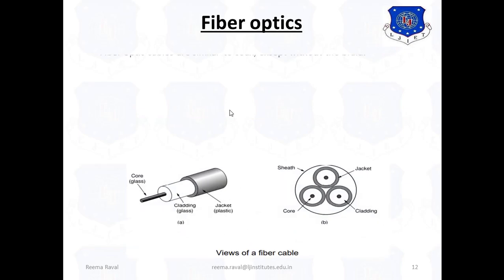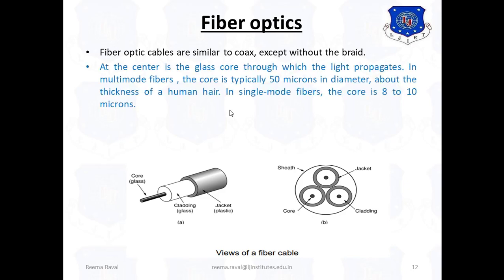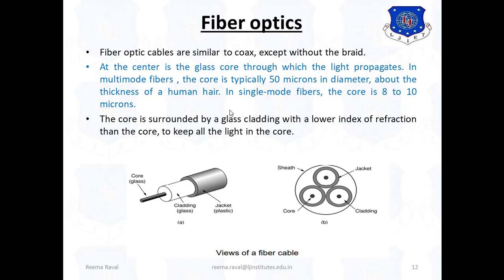Next is fiber optics. Fiber optic cables are similar to coaxial except without the braid. At the center is the glass core through which the light propagates. In multimode fibers, the core is typically 50 microns in diameter about the thickness of a human hair. In single mode fibers, the core is 8 to 10 microns. The core is surrounded by a glass cladding with a lower index of refraction than the core to keep all the light in the core. Next comes a thin plastic jacket to protect the cladding. As shown over here, these are the views of a fiber cable. As shown here, this is the core, this is the cladding and this is the plastic jacket of this fiber optic cable.